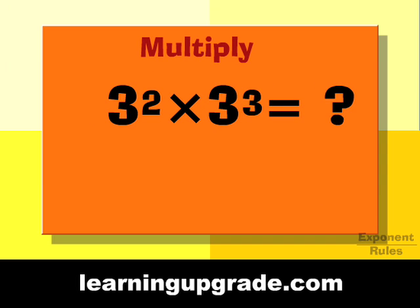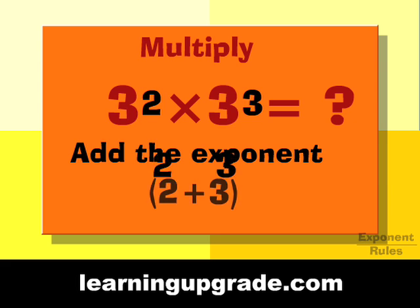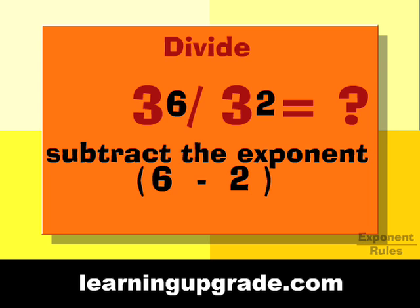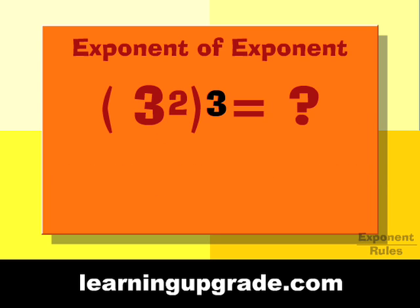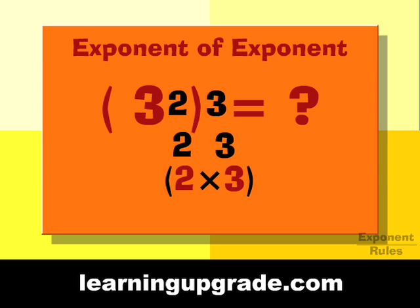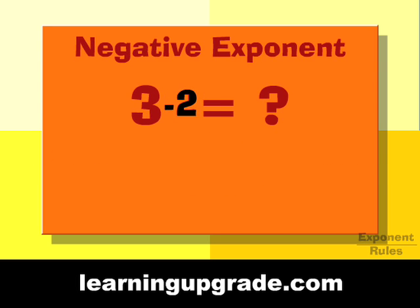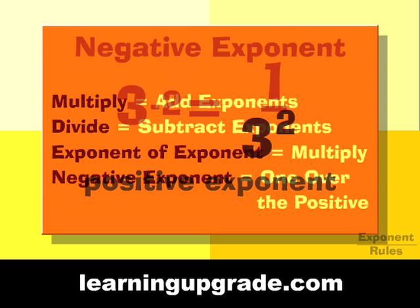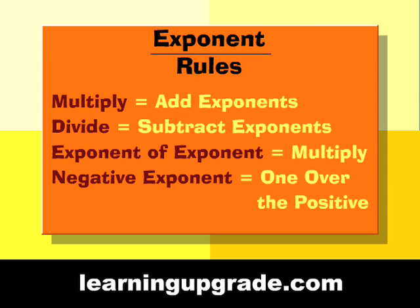Quick recap: When you multiply, add exponents. When you divide, subtract exponents. For an exponent of an exponent, you multiply. For a negative exponent, take 1 over the positive. That's exponents — to be continued.